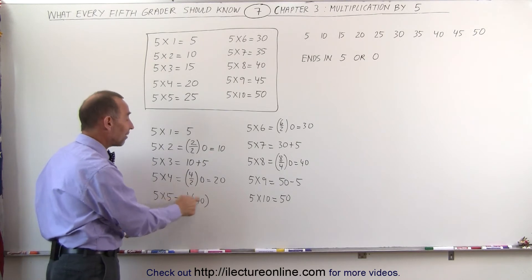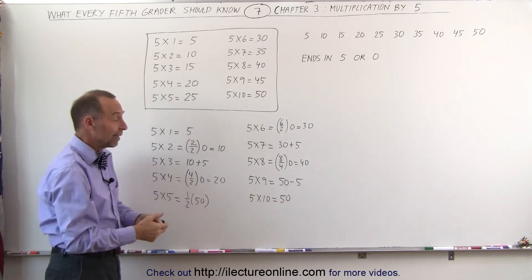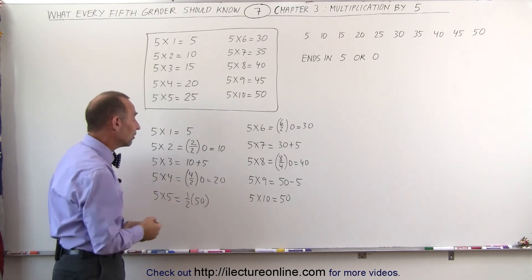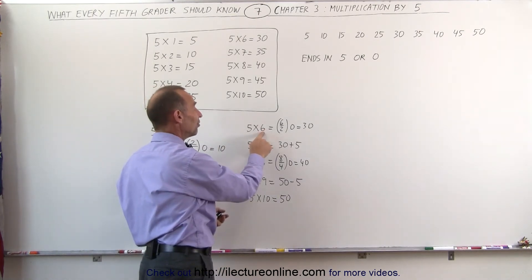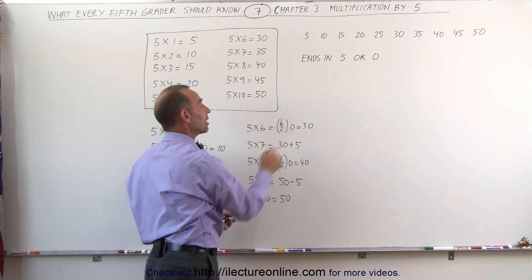5 times 5 is half the 5 times 10 answer. 5 times 10 is 50, half of that is 25. 5 times 6, again, you take half of 6, which is 3, add a 0, you get 30.